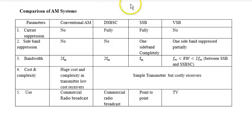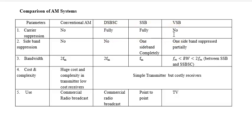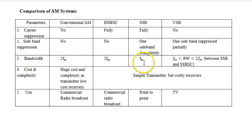The final slide shows a comparison of AM systems. For conventional AM: no carrier suppression, no sideband suppression, bandwidth = 2Fm, high cost and complexity in the transmitter but low cost receivers. For DSB-SC: full carrier suppression, no sideband suppression, bandwidth = 2Fm. For SSB: full carrier suppression, one sideband completely suppressed, bandwidth = Fm. For VSB: no carrier suppression, one sideband suppressed partially, bandwidth between Fm and 2Fm.